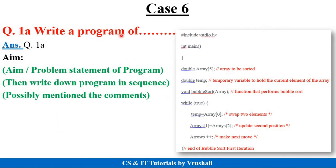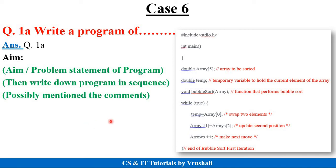Case six: 'write a program' — for example, write a program of bubble sort. First mention the correct question number. After that mention the aim or problem statement of the program, like 'C program of bubble sort' or 'C++ program of bubble sort.' Always give the aim or problem statement first, then write down the program. Write the program sequence-wise — for example, if there is a while loop, indent the commands inside it at the internal level. Always mention comments for each and every command — for example, 'this is array declaration' — as that will definitely give you good marks.